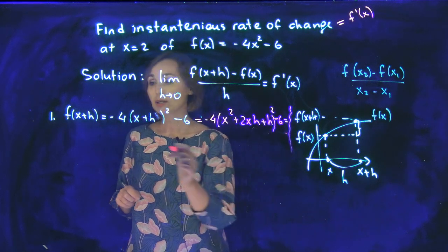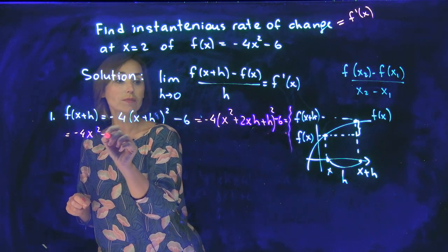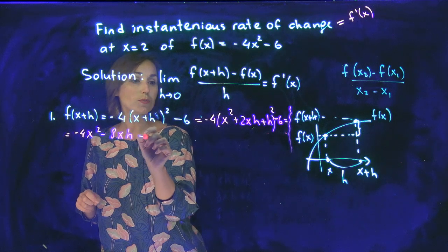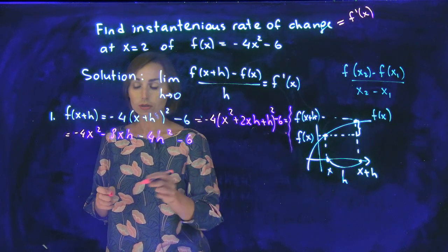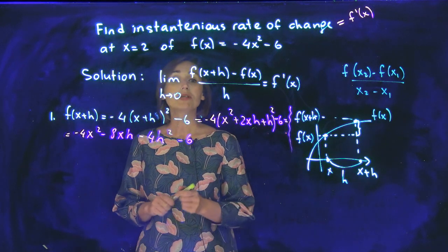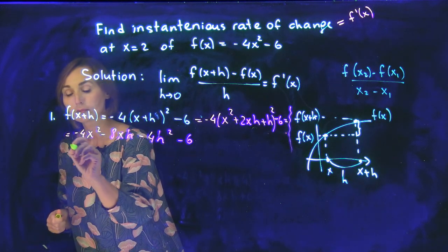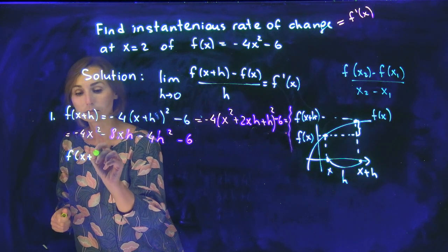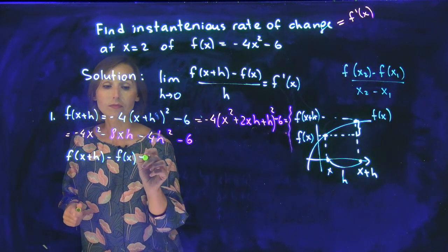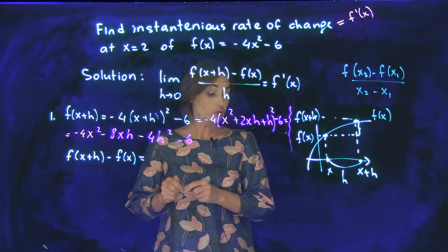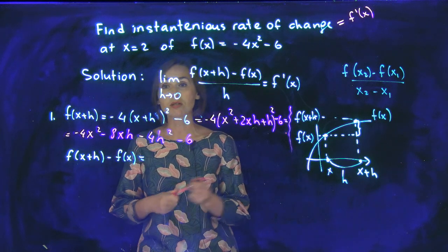Let's multiply by negative 4: negative 4x squared minus 8xh minus 4h squared and minus 6. Now let's do f at x plus h minus f at x. I do this step. On this step you always have a lot of opposites. So if you didn't get the opposite, that means that you made a mistake somewhere.